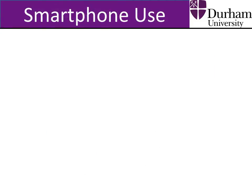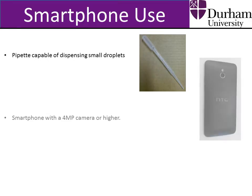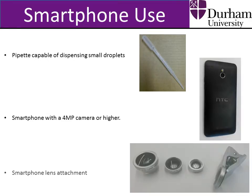In this tutorial, a simple alternative to this system is described that uses a pipette, a smartphone, and a lens attachment to take an image of a droplet. A free image editing software can then be used to calculate the contact angle from the image. This method costs less than 7 dollars and can be carried around in your pocket.